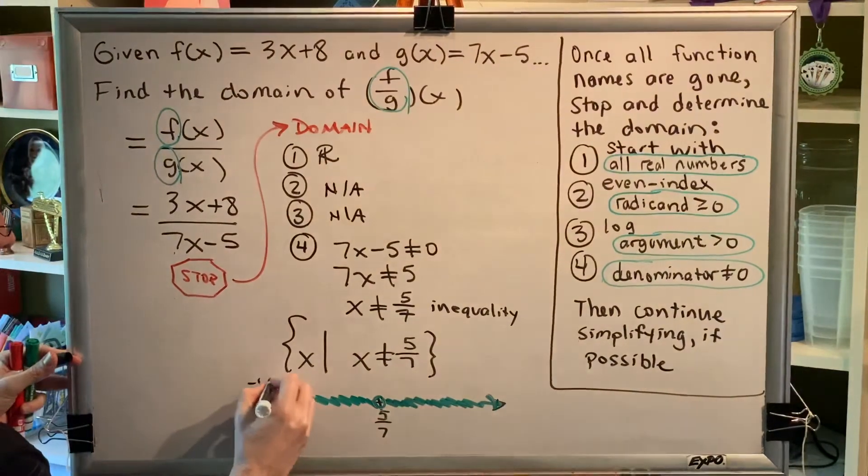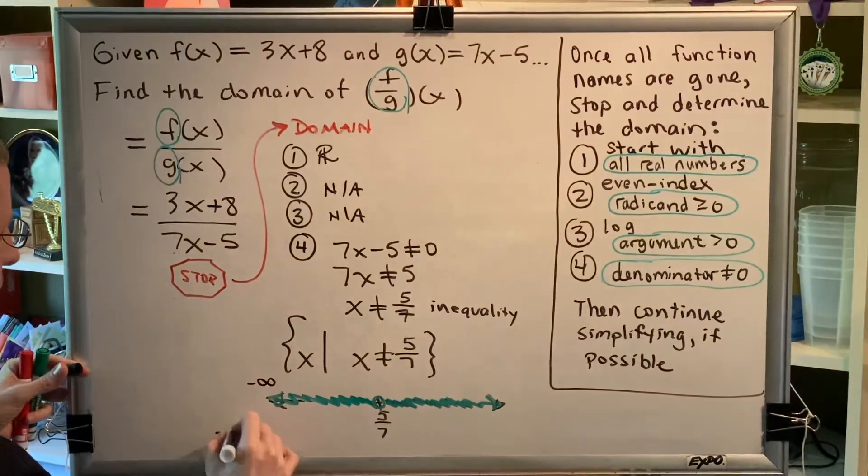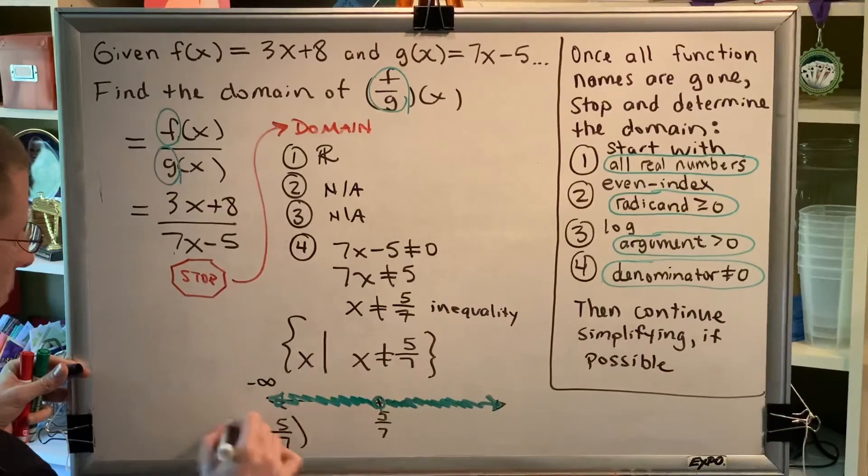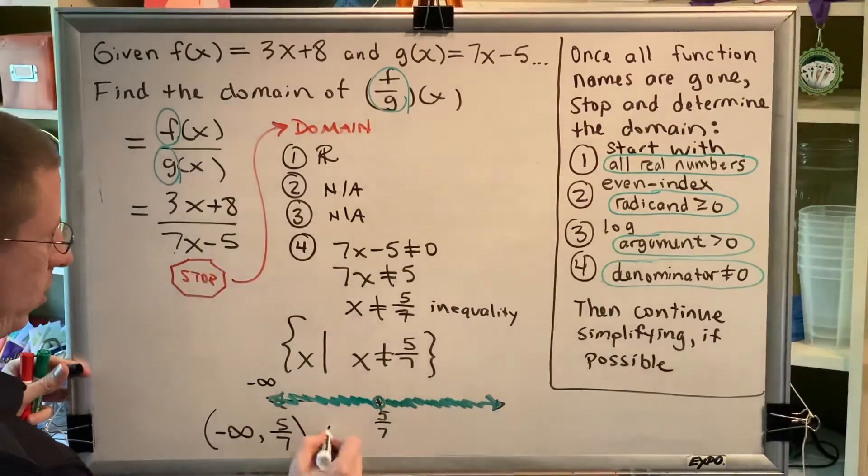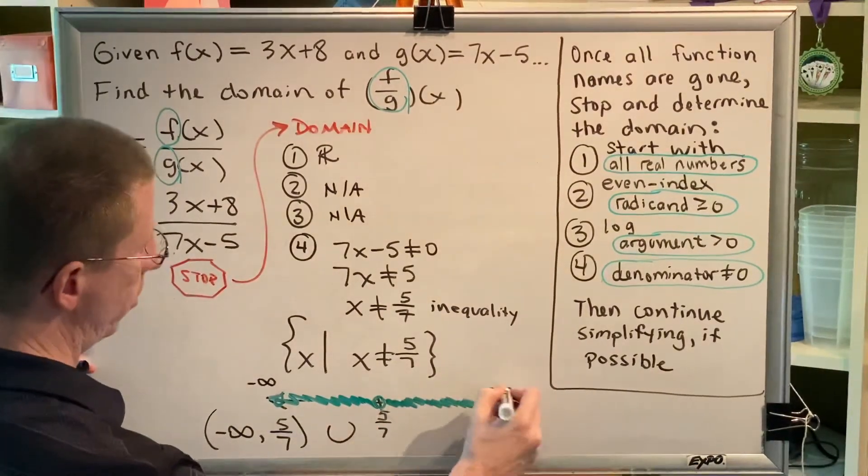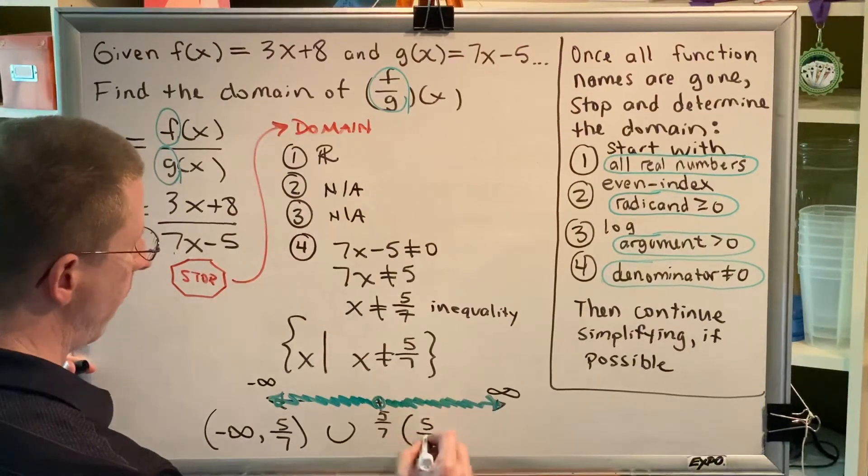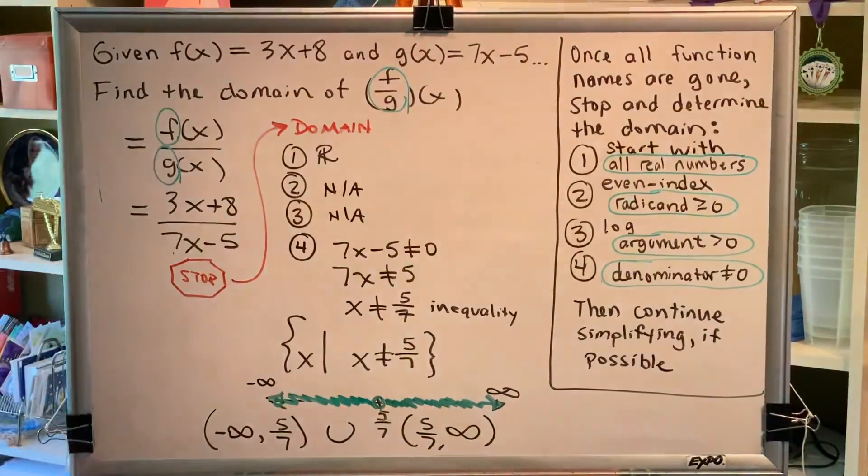So, my first interval would go from negative infinity all the way to 5 sevenths, and then I would union that with all of the other numbers, which would be going from 5 sevenths all the way to infinity.